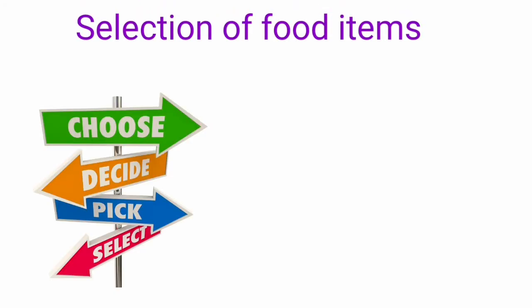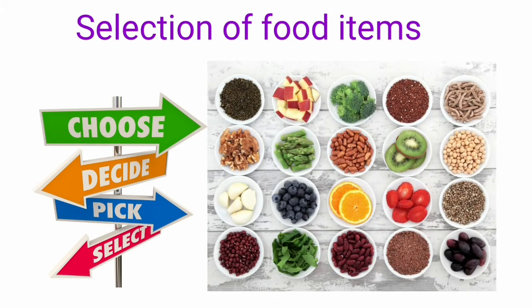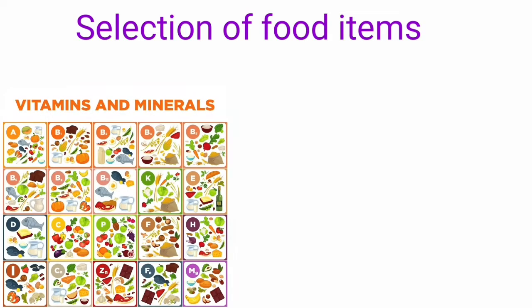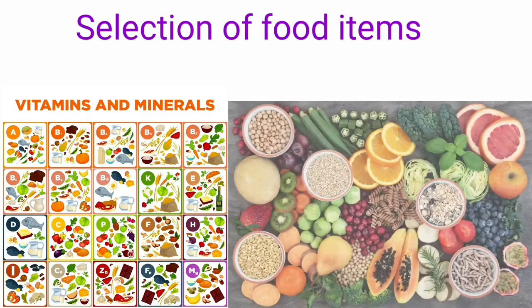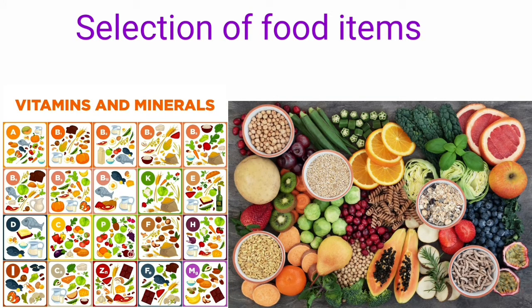How are food items selected from basic food groups? When you are preparing a balanced diet, we consider different food items. All the essential nutrients, including vitamins and minerals required for the body, are distributed in varying quantities in different natural foods. All these natural foods we call basic food groups.